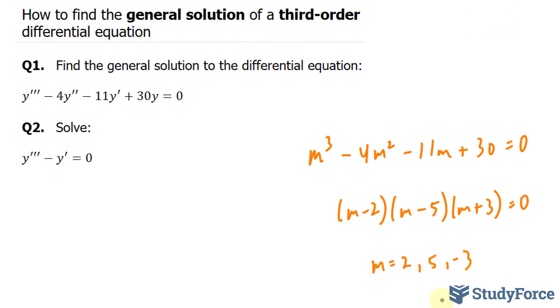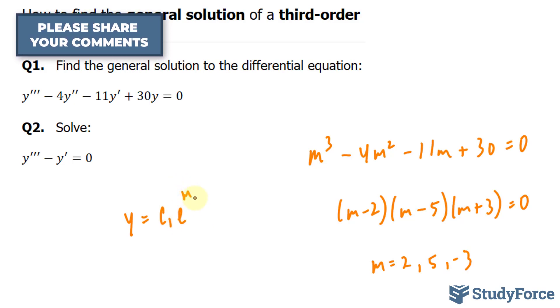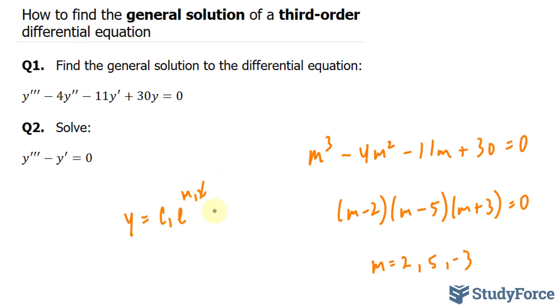Once you've found these roots, you can write the general solution. And the general solution, much like second order differential equations, will have the following template, where we have y is equal to c1 times e to the power of your first m times x plus c2 times e to the power of your second m times x plus c subscript 3 times e to the power of your third m times x.